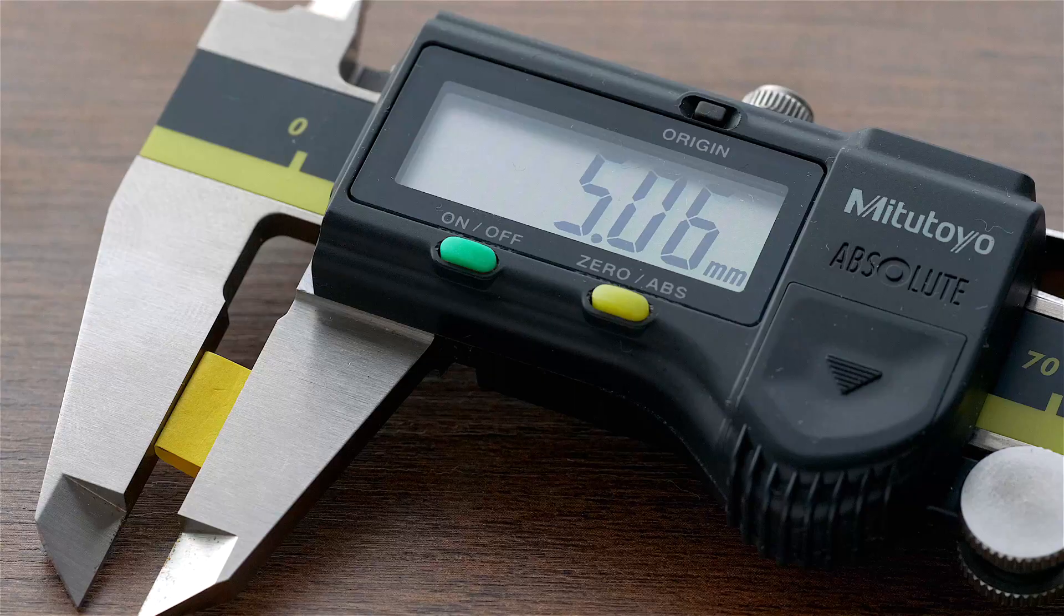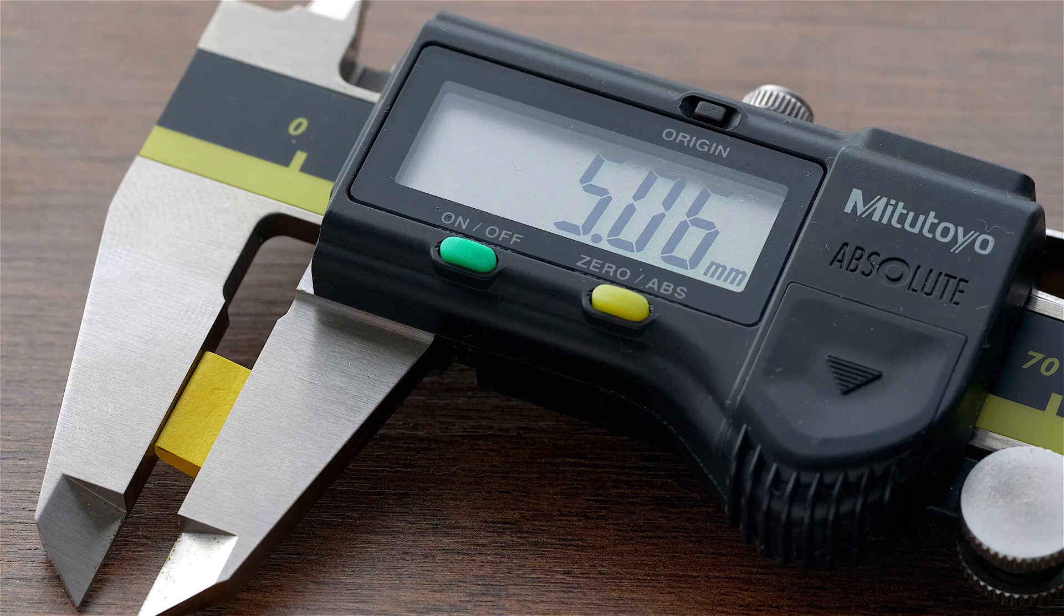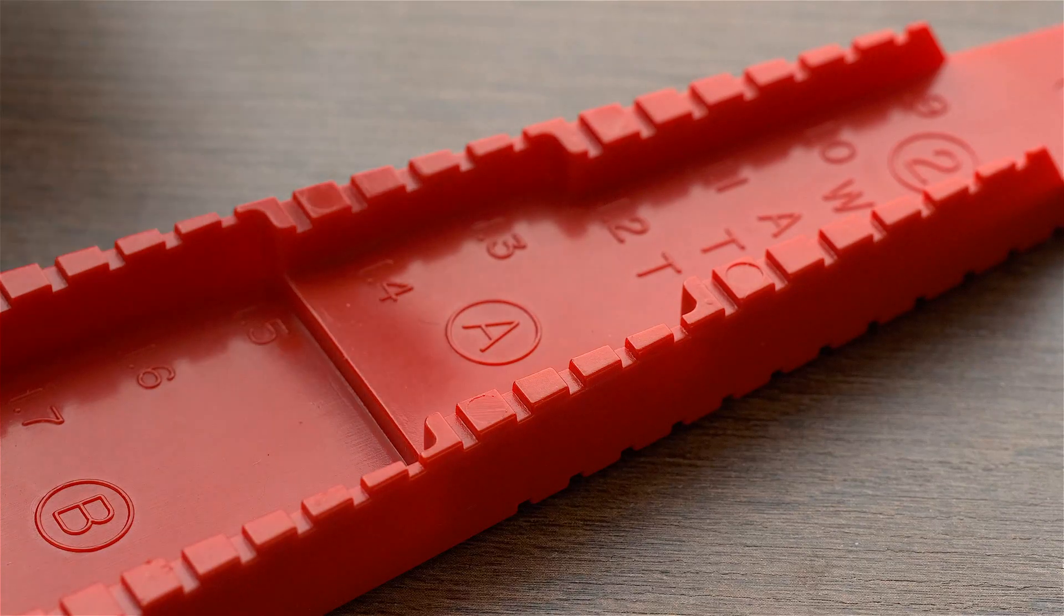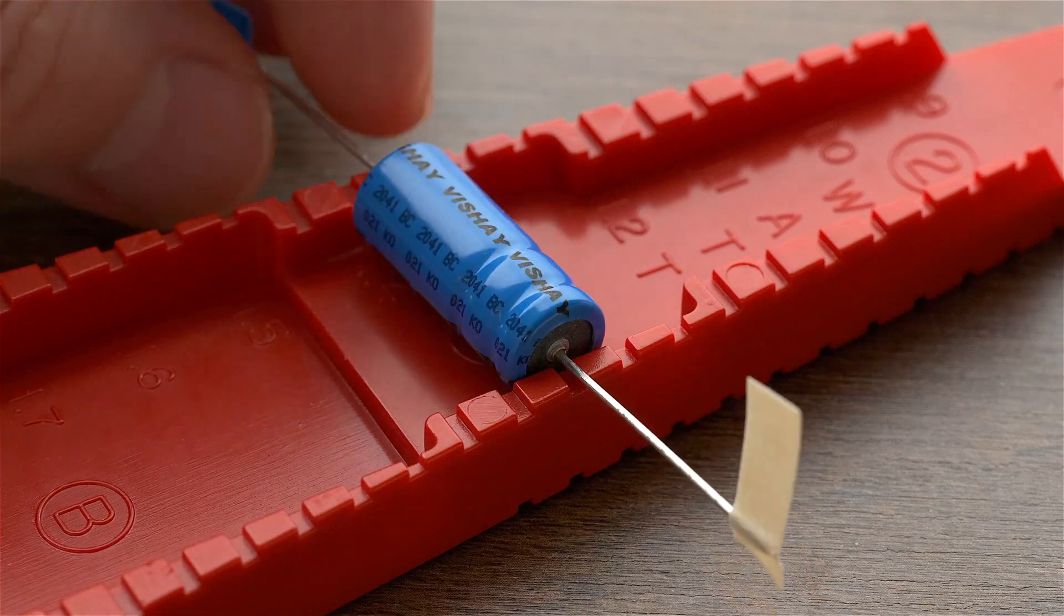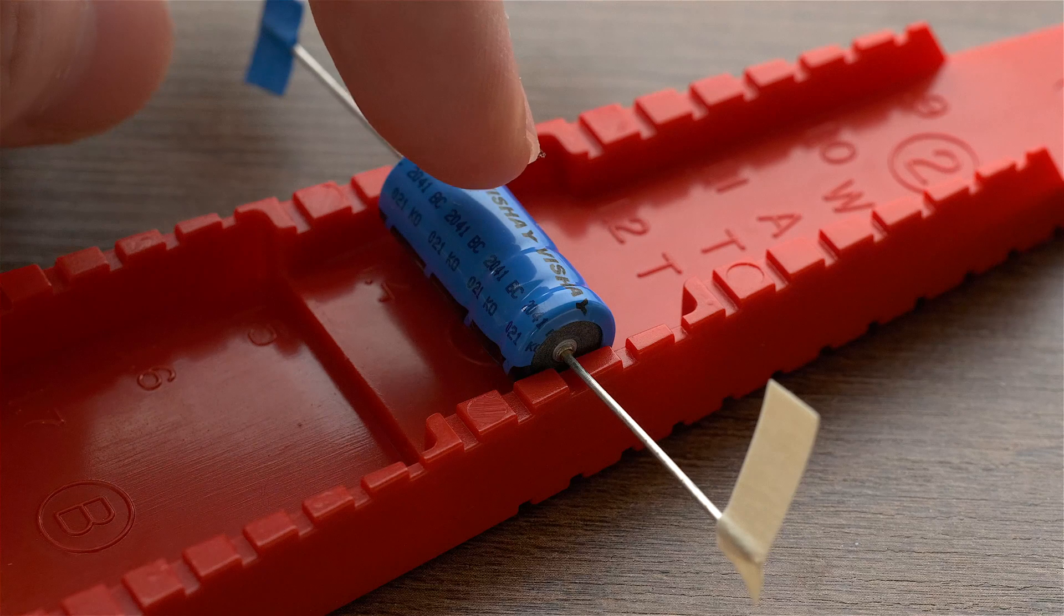To measure the depth for you of that central section, I folded a piece of paper. Then I measured that section of the paper to be about 5.1 millimeters. That means you can put 2 times the radius or about a 1 centimeter in diameter capacitor or other component in this central section.